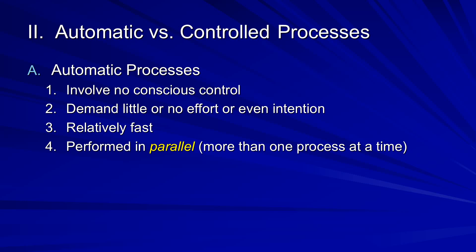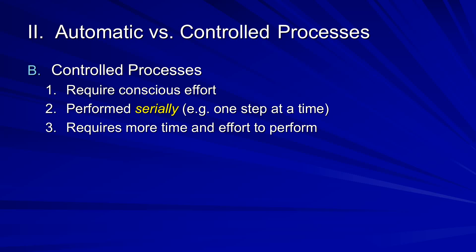You can walk and chew gum at the same time, walk and talk at the same time, because these things are accomplished relatively automatically. Controlled processes, on the other hand, require conscious effort and have to be performed serially — that is, you can only be doing one at a time. They require more time and more effort to perform. Anytime we're diverting our attention to something else, we're eating into these controlled processes. For example, texting on your phone is not an automatic process — it requires conscious effort because you have to think about what you're going to say and figure out where the keys are. It always takes away from the other processes you're trying to accomplish.